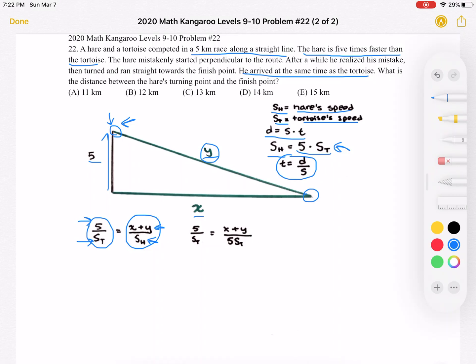So instead of S sub H, we can replace that with 5 S sub T, because this way we can cancel out nicely. Then when we cancel out the S sub T's and cross multiply, we'll get that X plus Y is equal to 5 times 5, which means X plus Y is equal to 25, using that equation.